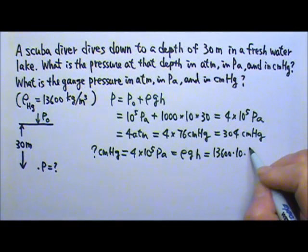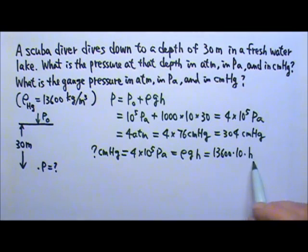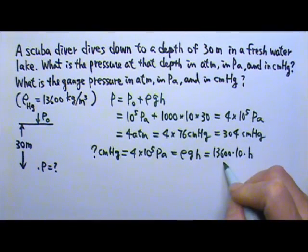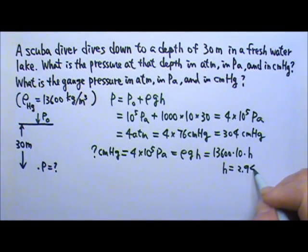And the h is the depth or the height of the mercury column we're looking for. So if you set these two equal, we can find h to be 2.94.